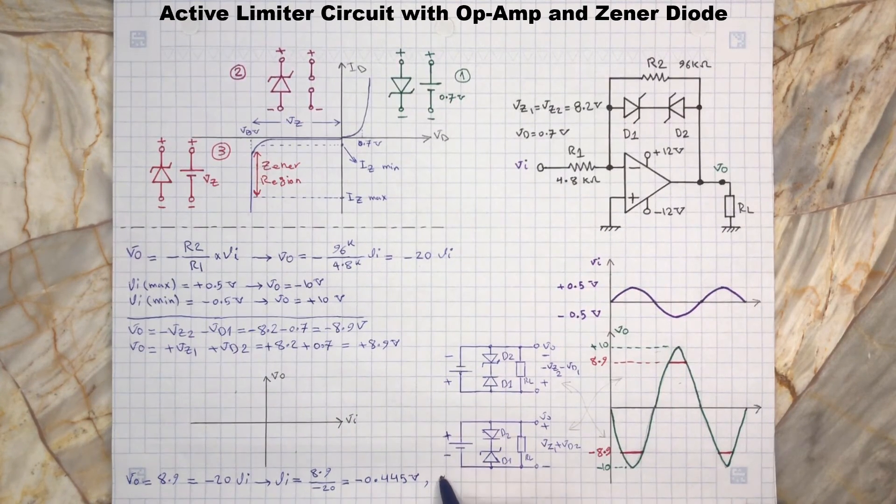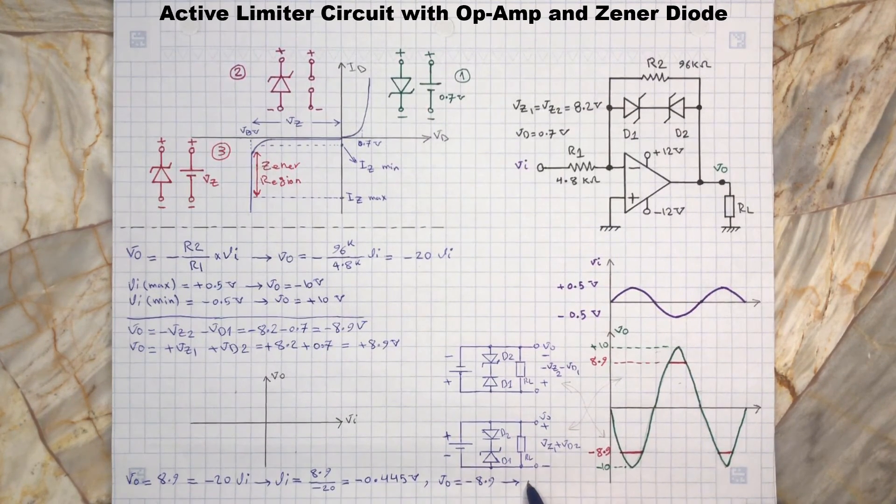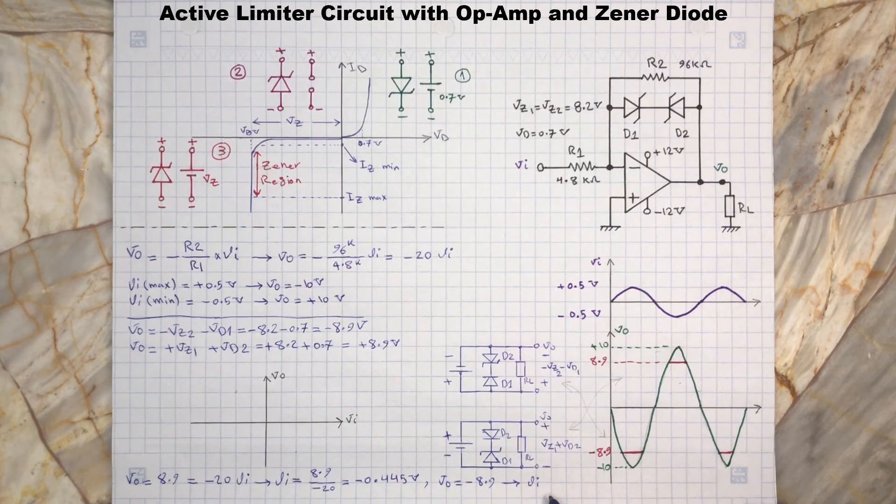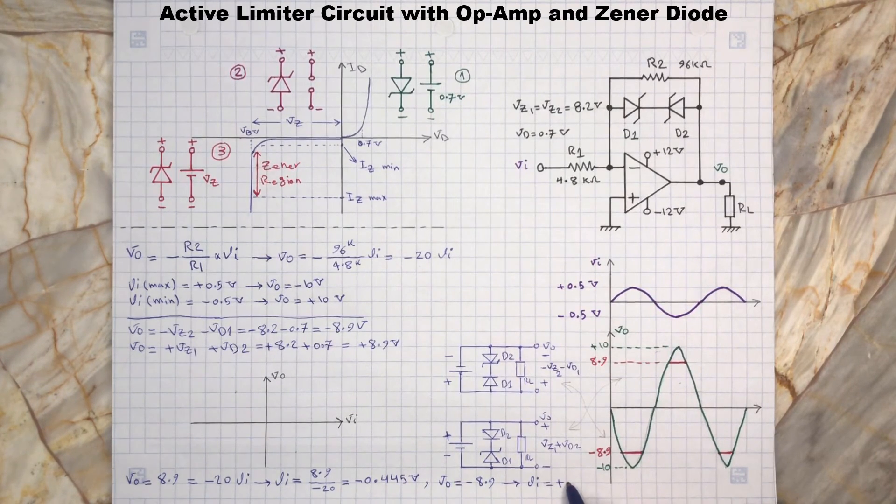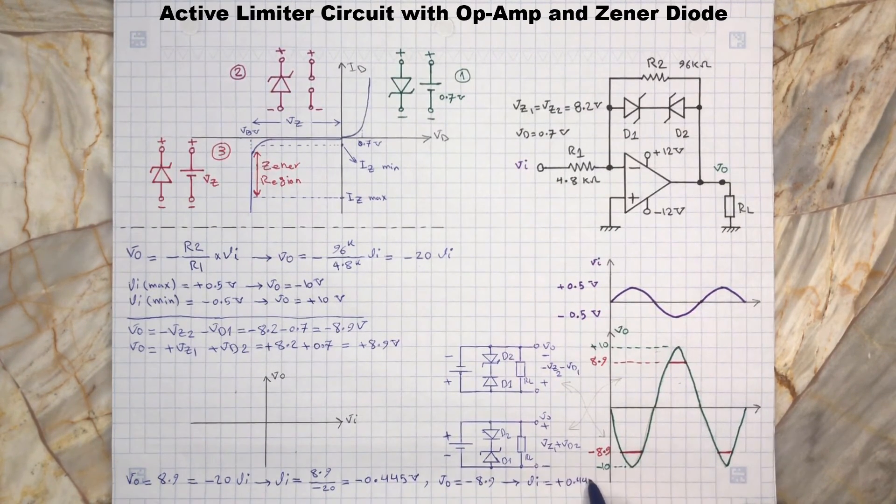The same way, when Vo is equal to minus 8.9, then we will have Vi at positive 0.445.